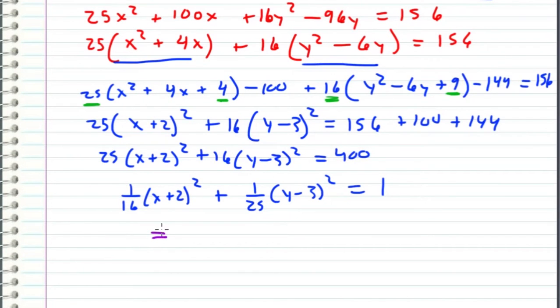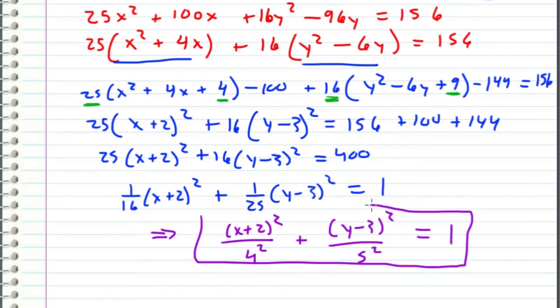So now we can express the ellipse that we started with as x plus 2 squared over 4 squared plus y minus 3 squared over 5 squared. And this is all equal to 1. And the reason why we like this form is because it makes it easier for us to plot it.